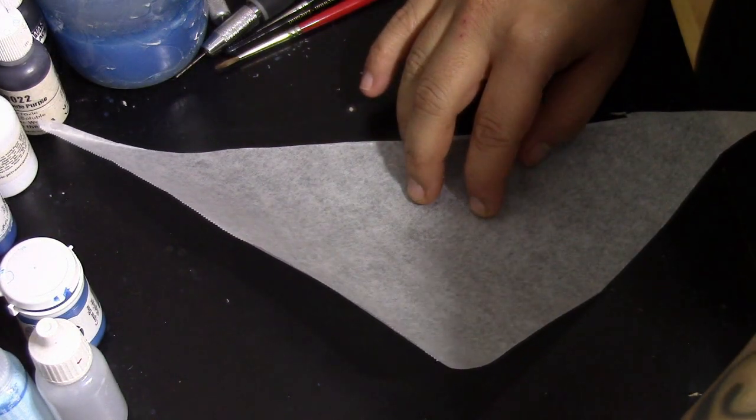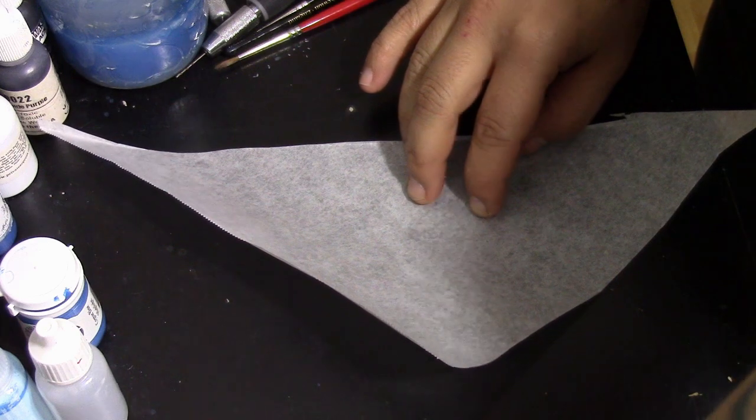I just cut mine into squares and fold them in half diagonally. I use this stuff for wet palettes anyway so I have it on hand.